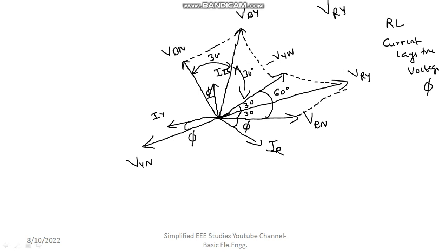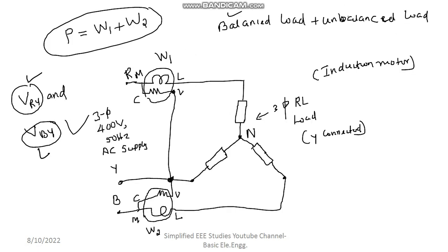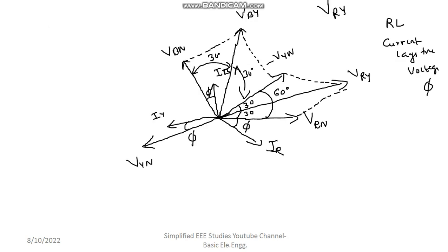Now I need to estimate the total amount of power. So W1 and W2 we have to compute. How to calculate W1? So W1 is nothing but. Let me draw the W1. What is the voltage? Line voltage VRY, right? What is line current? Line current is IR.